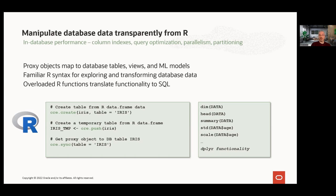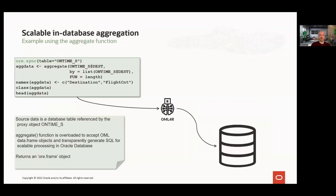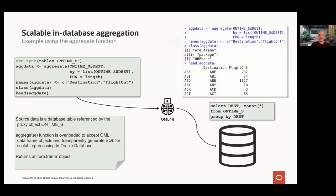We also have other overloaded functions, including those that implement the dplyr interface. Consider an example involving the overloaded aggregate function. We first get our proxy object to a table called ontime_s and aggregate to count the number of flights to each destination. This request effectively results in a query with a GROUP BY on the dest column. Running this function, we get back an ore.frame object. It's only when we go to retrieve the result that we incur the computation cost. Invoking the head function computes the result and retrieves the first few rows. Rather than pulling the entire result to the client, the result remains in the database with a proxy object returned for subsequent use.